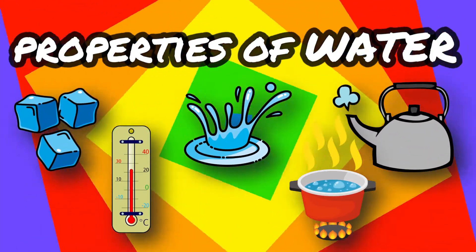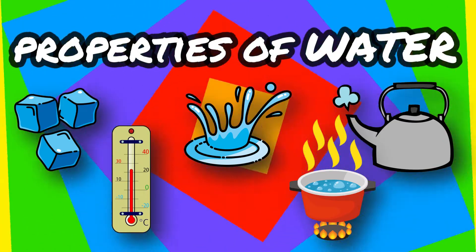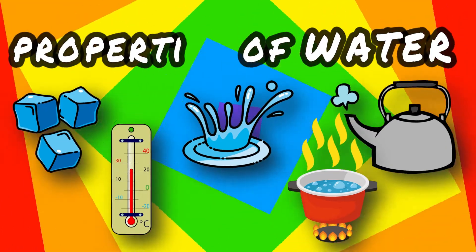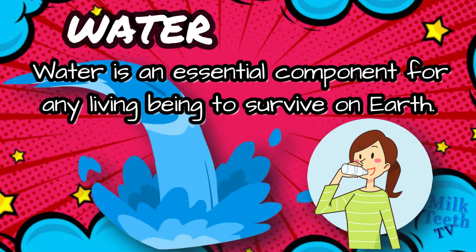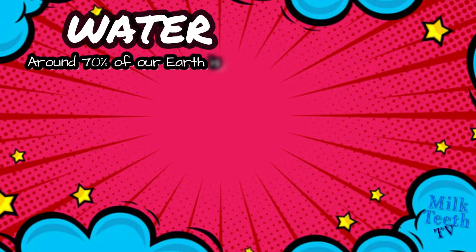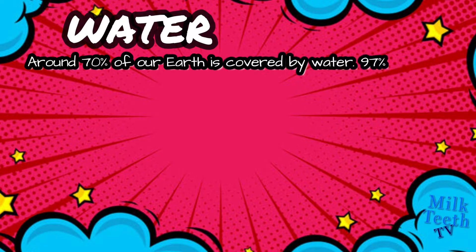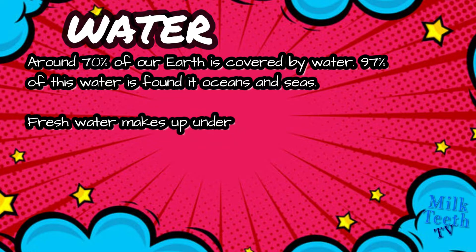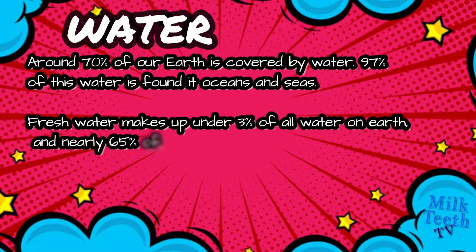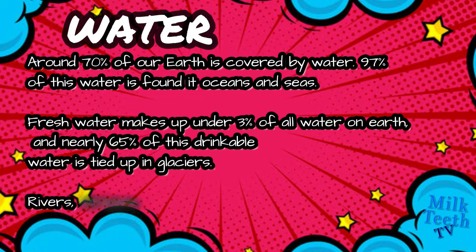Properties of Water. Water is an essential component for any living being to survive on planet Earth. Around 70% of our Earth is covered by water. 97% of this water is found in oceans and seas. Fresh water makes up under 3% of all water on Earth, and nearly 65% of this drinkable water is tied up in glaciers.